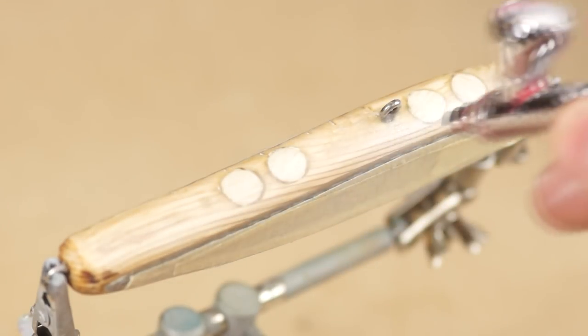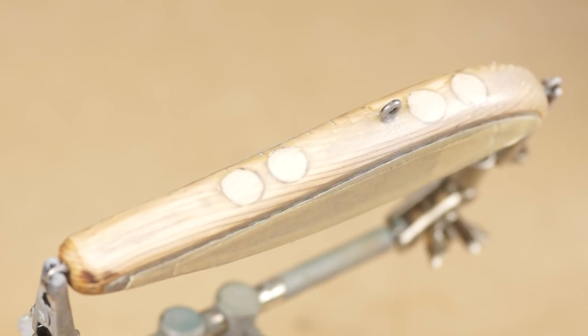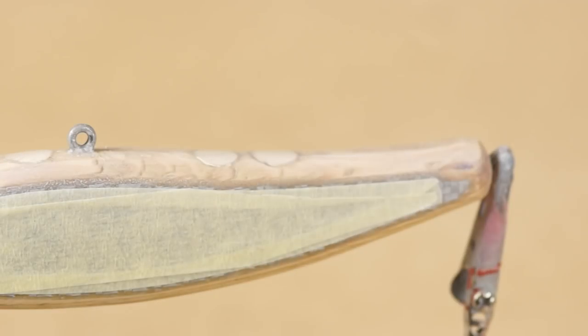To hold the lure when spraying I've placed it in a helping hands device these are normally used for soldering. With the added thinners the paint tends to go on in very fine mists. These tend to dry very quickly but they do need a little bit of help between coats from a heat source to really set the paint.